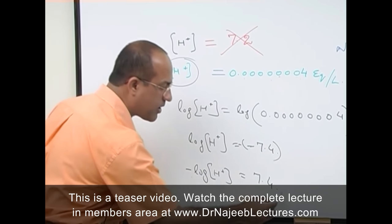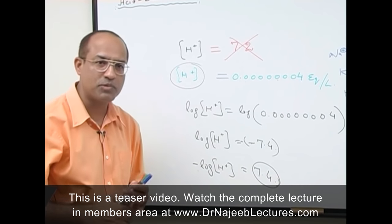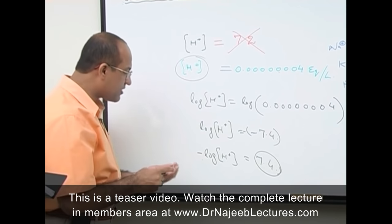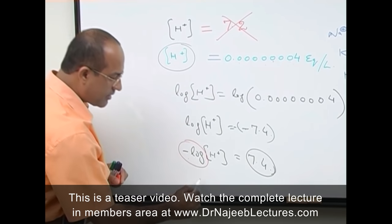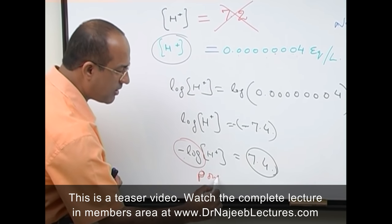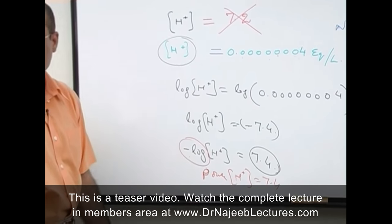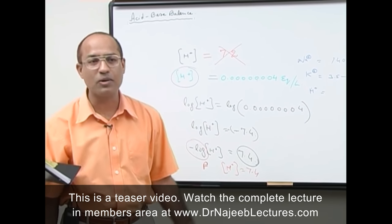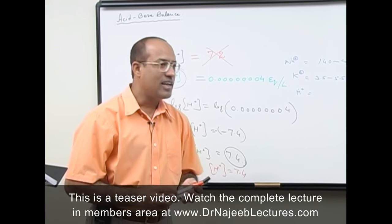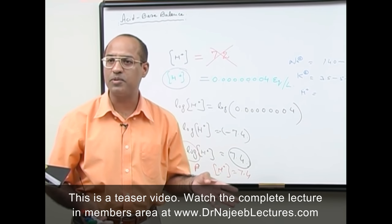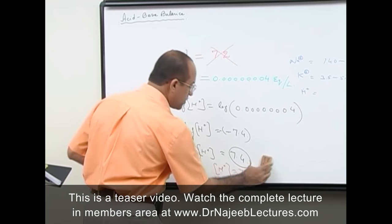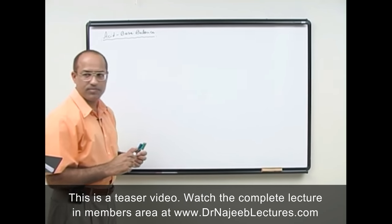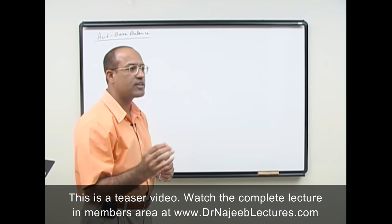Taking the negative log of hydrogen ion concentration, the negative times negative cancels on the right side, giving 7.4. So minus log of hydrogen ion concentration in normal extracellular fluid equals 7.4. Then someone said: instead of calling it 'negative log,' call it the 'power of hydrogen ion concentration.' Then, abbreviated further, just 'p' and 'H' — giving us pH. This is how pH = 7.4 in a healthy person was derived.